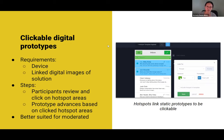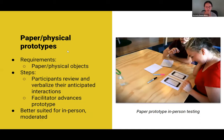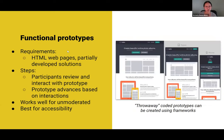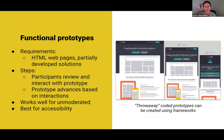Clickable digital prototypes are still better suited for moderated because linked things can break and you've got to get participants back to an initial starting spot. Stepping it up once more is the functional prototype. This is not just images — you're actually having HTML web pages, partially developed solutions. It's much more robust to be tested. Participants review and interact with the prototype, and the prototype advances based on those interactions. It works really well for unmoderated because everything is hooked up how it's supposed to be.